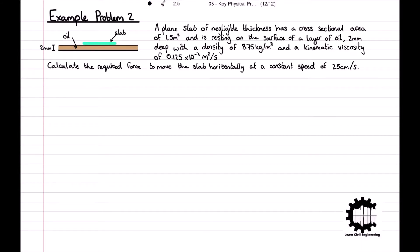A plain slab of negligible thickness has a cross-sectional area of 1.5 metres squared and is resting on the surface of a 2 millimetre deep layer of oil. The oil has a density of 875 kilograms per metre cubed and a kinematic viscosity of 0.125 times 10 to the power of minus 3 metres squared per second. Calculate the force required to move the slab horizontally at a constant speed of 25 centimetres per second.